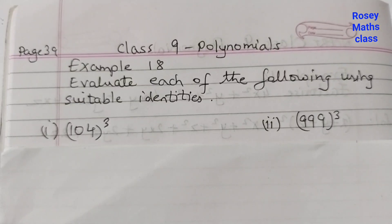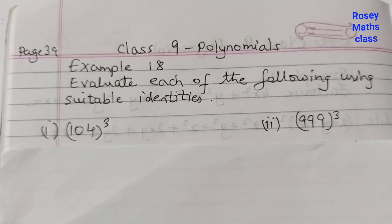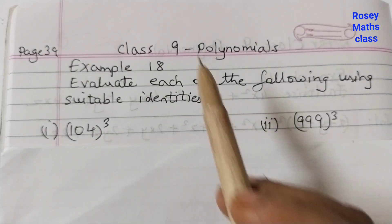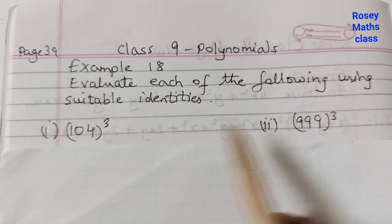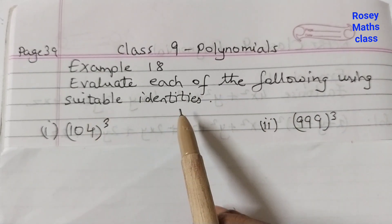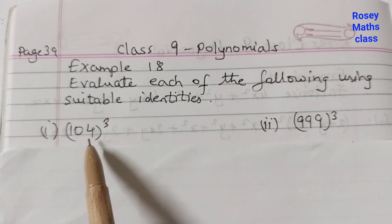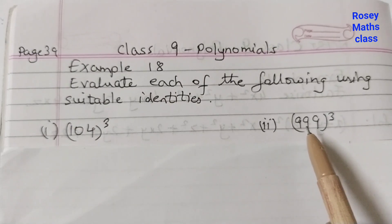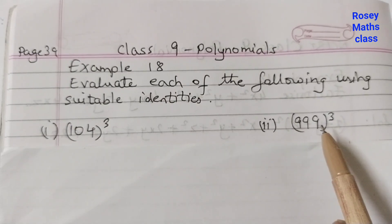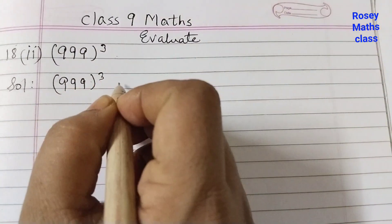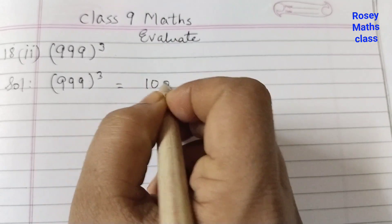Hello students. In today's video we shall discuss example number 18 part 2 of chapter 2, Polynomials — evaluate each of the following using suitable identities. We already did the first one in our last video. The second one is 999 cubed, which we are going to solve now. 999 cubed can be written as 1000 minus 1, cubed.